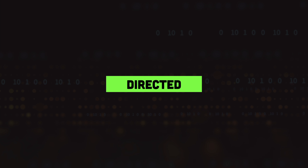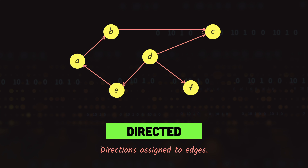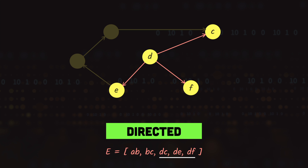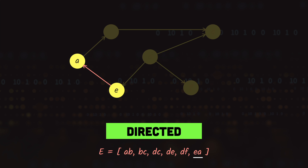Next we have the directed graph, where direction is tied to each of the edges shown by arrows. For example, we can move from node A to node B but we can't travel from node B back to node A. The edges are: from A we have AB; from B we have BC; from C there are no outgoing edges; from D we have DC, DE, and DF; from E we have EA; and from F there are no outgoing edges.